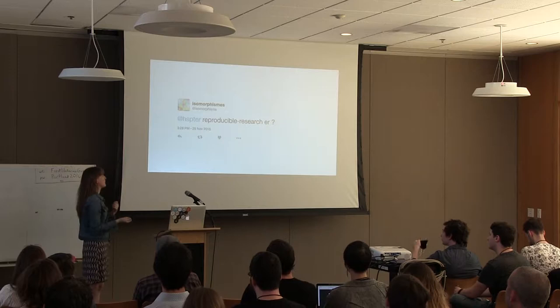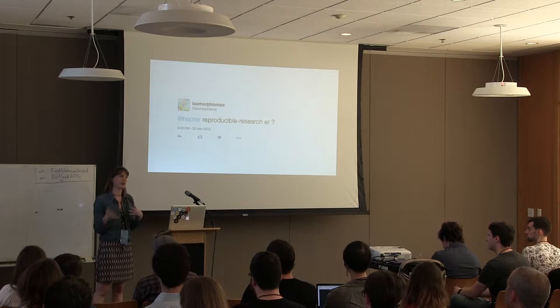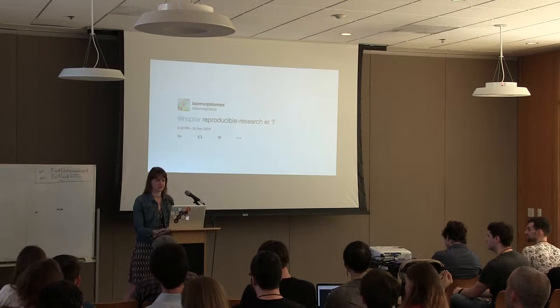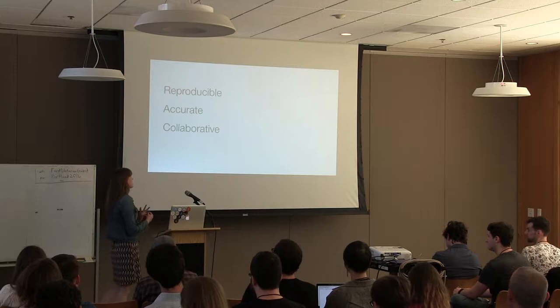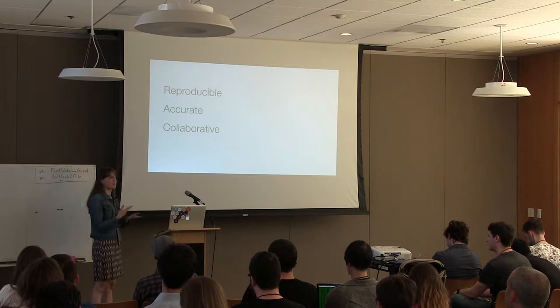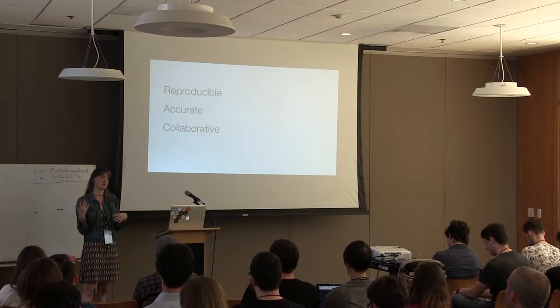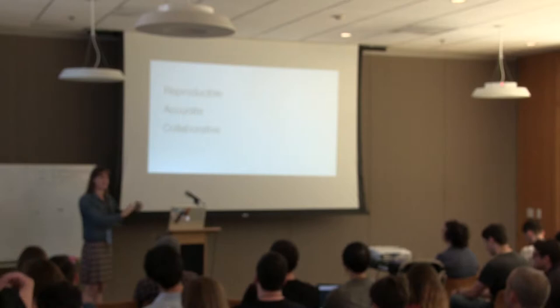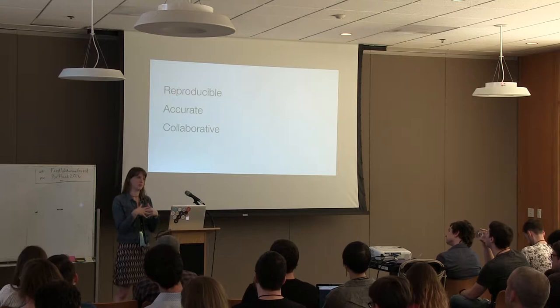Someone else suggested 'reproducible researcher,' and I like this — reproducibility is something I've cared about for a long time. But I think there's more than just reproducibility. You want to create analyses that are reproducible, but there's also accuracy — knowing your code is doing what you think it's doing. There's also a collaborative aspect we never talk about, and reproducibility doesn't address collaborative tooling at all. So it's a little too limited.